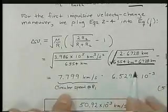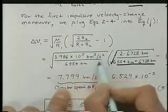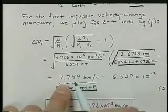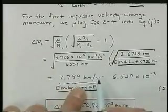I showed you this in two pieces so that you can see this first term is simply the circular speed at R1, 7.799 kilometers per second.